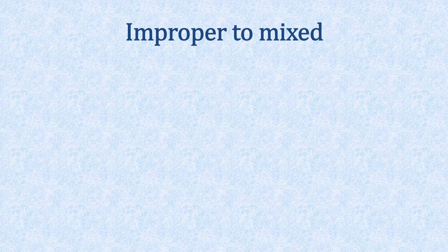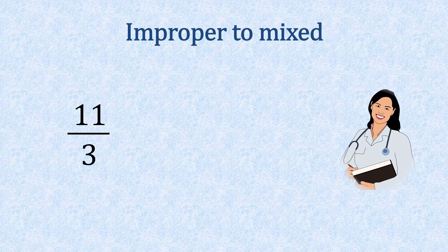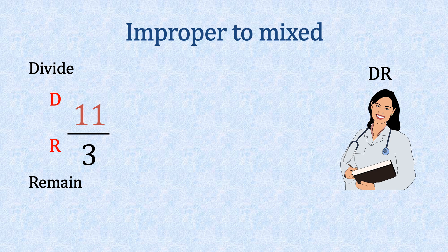Now we're going to change an improper fraction to a mixed fraction. Here we've got 11 thirds, and our formula is the Doctor formula — DR. D for divide, R for remain. So 11 divided by three goes in three times — that's our whole number — and we have two left over. The three remains on the bottom. So our answer is three and two thirds.